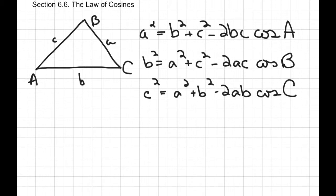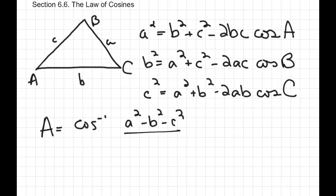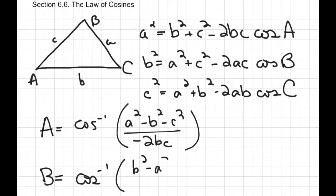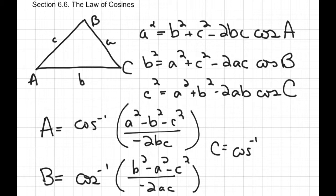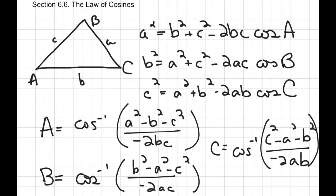We can also use the law of cosines to find a missing angle. In class we derived that angle A equals the inverse cosine of (A squared minus B squared minus C squared) over negative 2BC. For angle B: inverse cosine of (B squared minus A squared minus C squared) over negative 2AC. For angle C: inverse cosine of (C squared minus A squared minus B squared) over negative 2AB. Notice the pattern. When doing this on your calculator, evaluate what's inside the parentheses first before taking the inverse cosine.